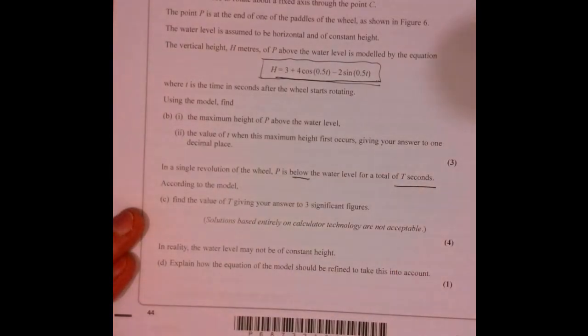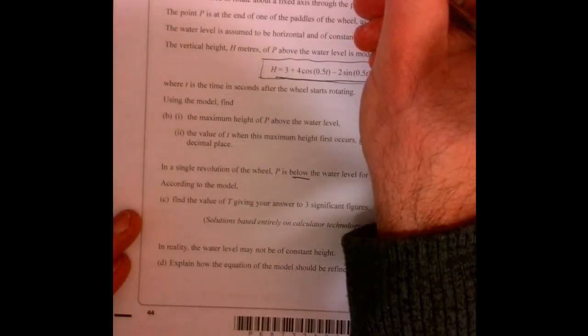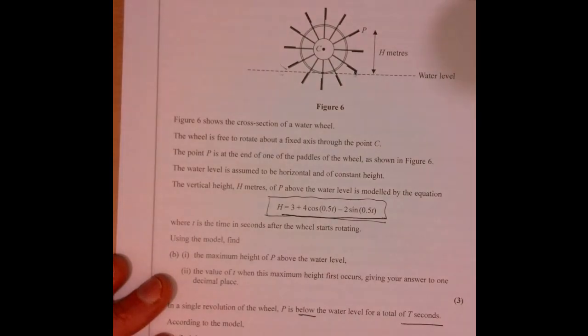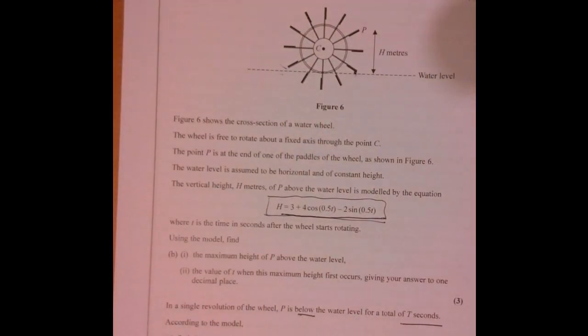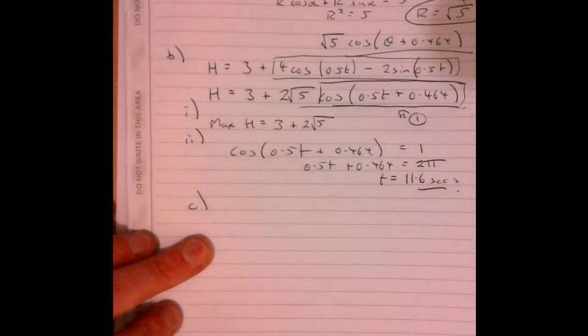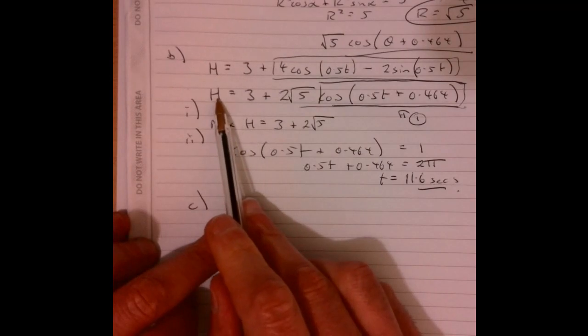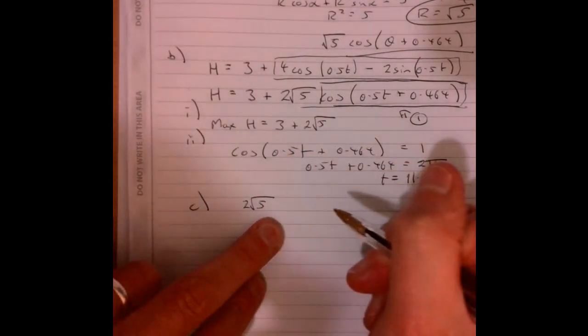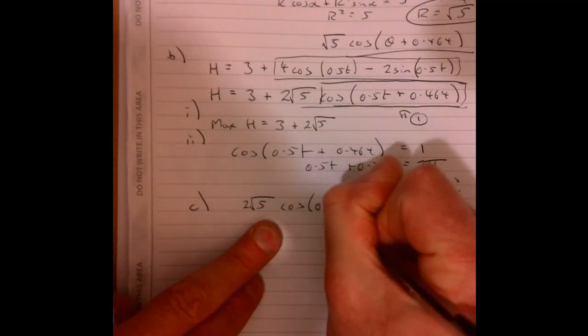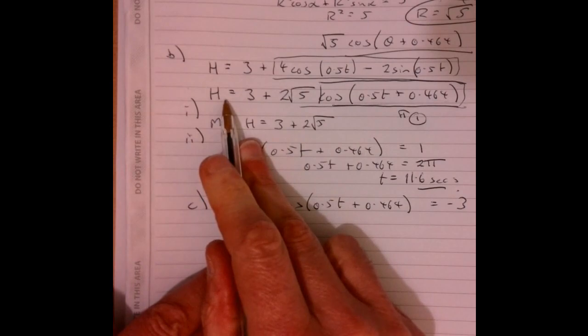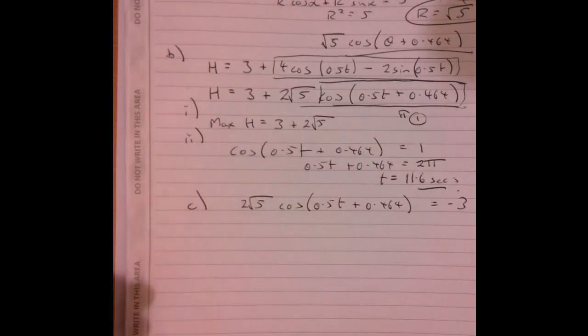So if I can work out this point here when it first goes below, when it goes below and then work out when it comes back up, there's going to be an element of symmetry to this here. So you really need to work out the first point. So what we're interested in is when is this going to be equal to zero? So if we take away 3 from both sides, what we're interested in is 2 root 5 cos of 0.5T plus 0.464 equals minus 3. I've just taken away 3 from both sides and said that's when it's equal to zero. So I'm trying to work out this, I'm going to call it T1, the first time that that actually happens.